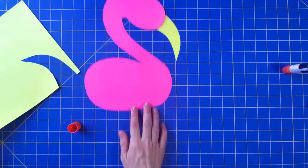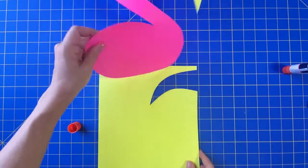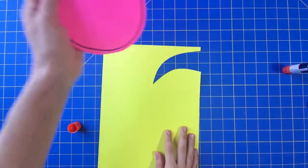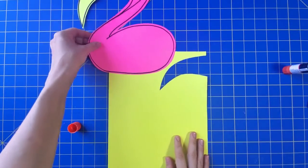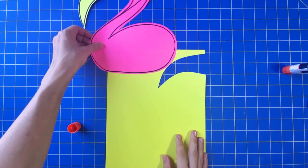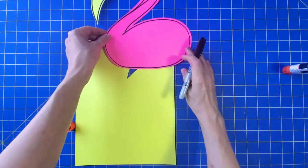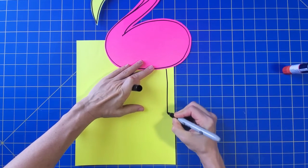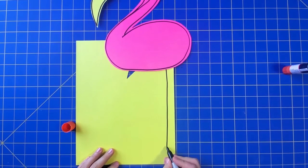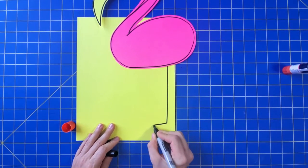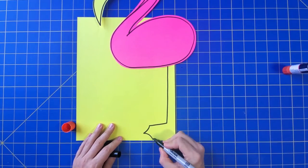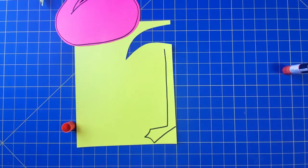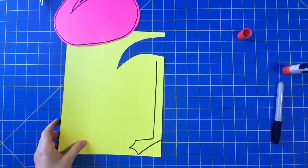So there's my flamingo with the beak. Next, my flamingo needs some legs. Using the yellow paper and the black marker again, I'm going to use the back of the flamingo. I'm going to draw one really long leg, and then the foot at the bottom is a little triangular shaped, but it's webbed, so it's going to look like that. I'm going to use the edge of this paper as the other side of my leg, so now I can cut that out.